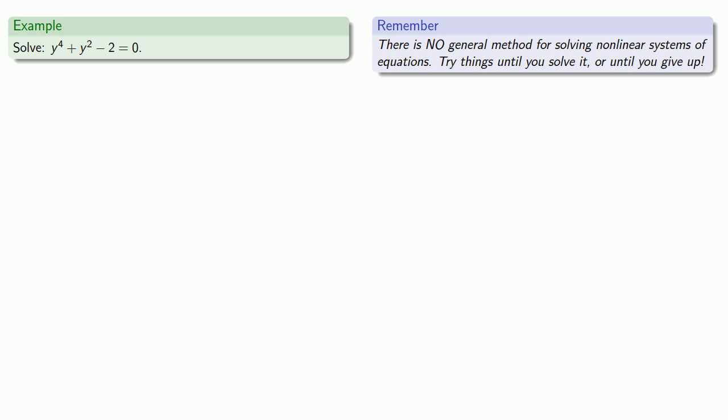Something we can do is look for any relationships we might find between the variable expressions. And in this case, our variable expressions are y to the fourth and y squared. And we might make the following observation. If we let y squared be x, then y to the fourth is y squared squared or x squared. And so our equation can be rewritten as...